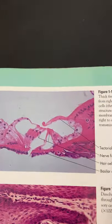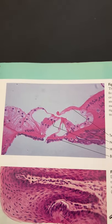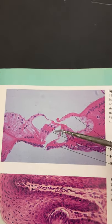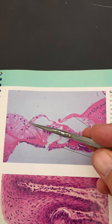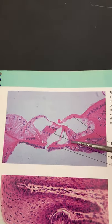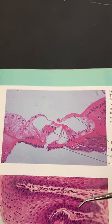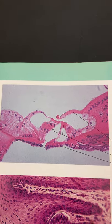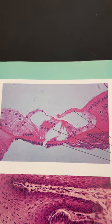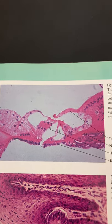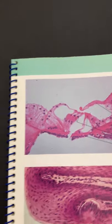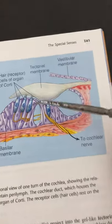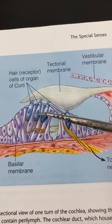Here's a microscope picture — you can see the nuclei of the hair cells. Stereocilia is what they call some of those hairs.